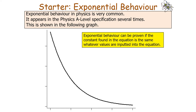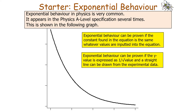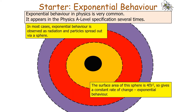Exponential behaviour can be proven if the constant found in the equation is the same whenever values are inputted. In most cases, exponential behaviour is observed as radiation and particles spread out via a sphere, with surface area 4πr², giving a constant rate of change and exponential behaviour. Another way we can observe exponential behaviour, which isn't linked to particles spreading through a sphere, is in radioactive decay.